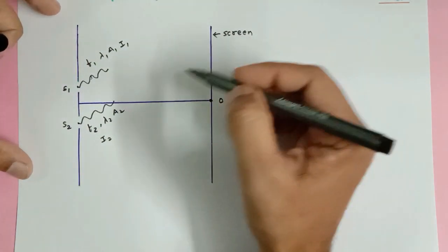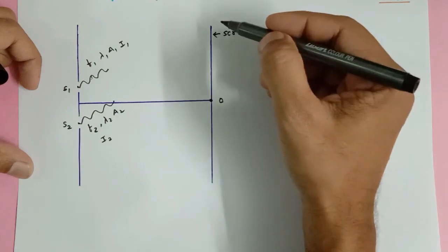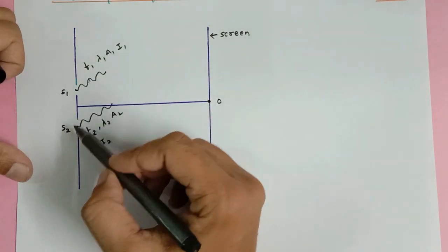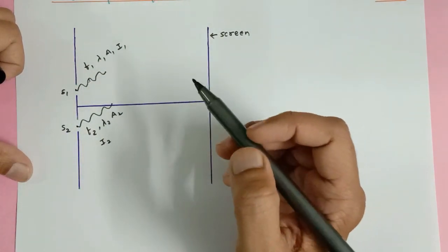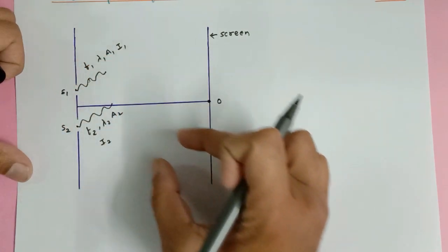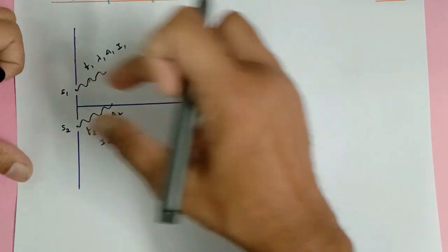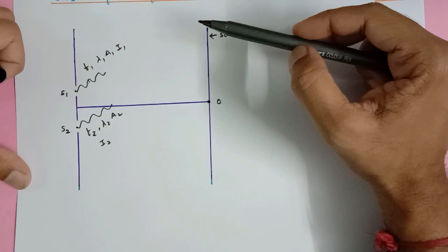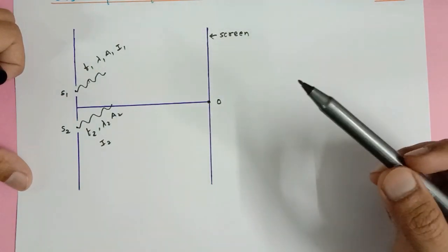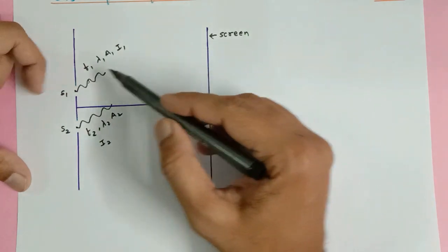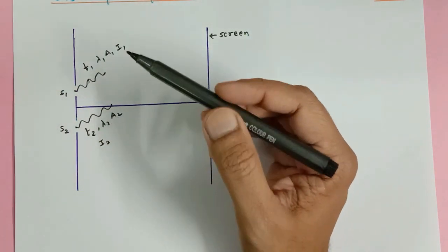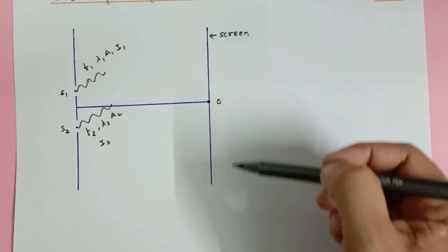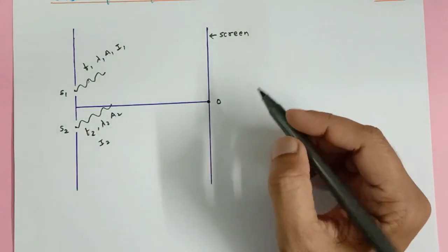Where is the superposition going to take place? Everywhere on the screen — so you will be getting fringes at different locations. I have just drawn two light waves in the upward direction, but that is not the complete picture. The waves are also going down meeting here, coming straight and meeting here, going over here and meeting. So there is an interference pattern — formation of dark and bright fringes. The crest of one wave may fall on the trough of another, crest on crest, or trough on trough. There are various possibilities we will discuss in the upcoming series.